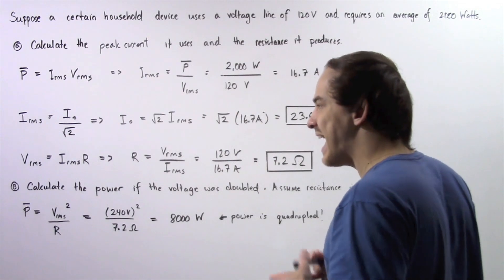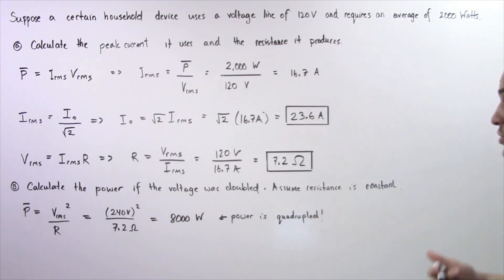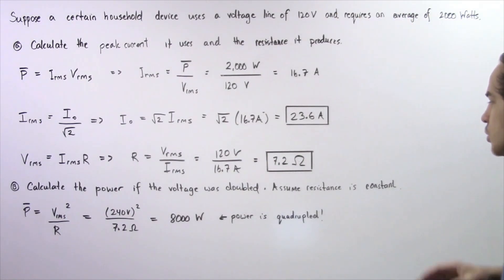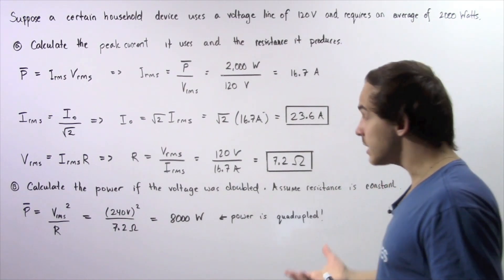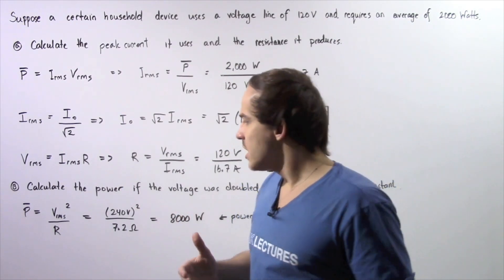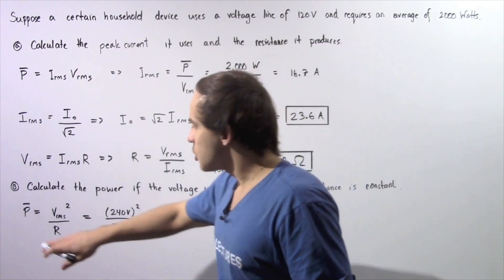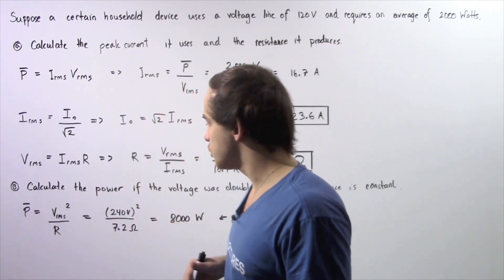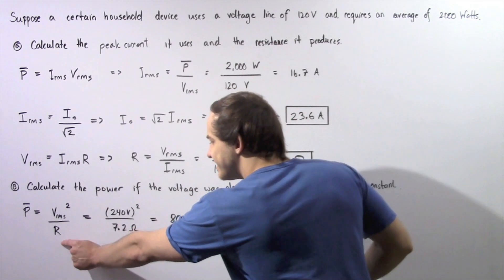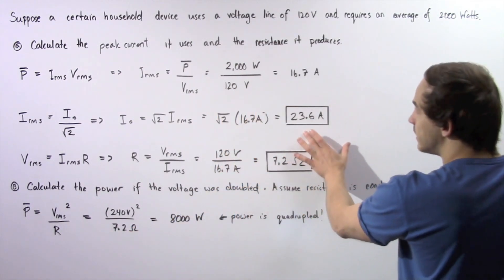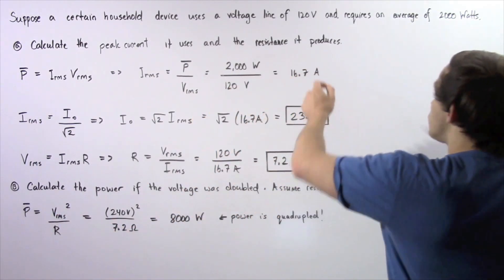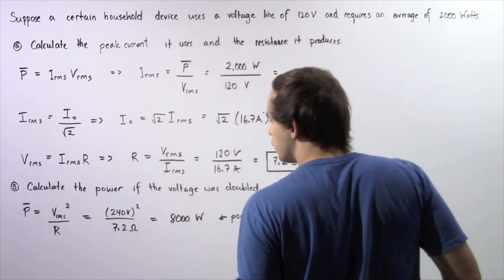Now let's move on to part B. We calculate the electric power the device uses if the voltage is doubled from 120 volts to 240 volts, assuming the resistance is constant. Our device is essentially a resistor, so the average power output equals the RMS voltage squared divided by the resistance. The resistance is 7.2 ohms from part A, and the RMS voltage is now 240 volts.